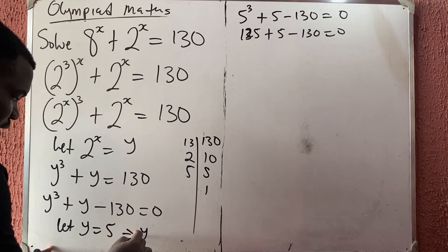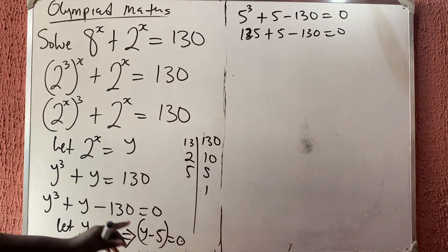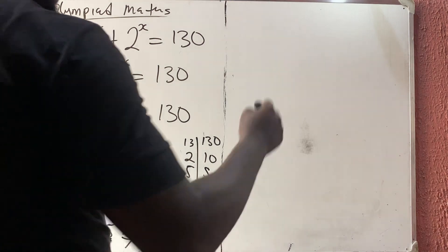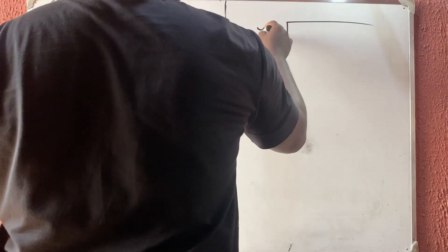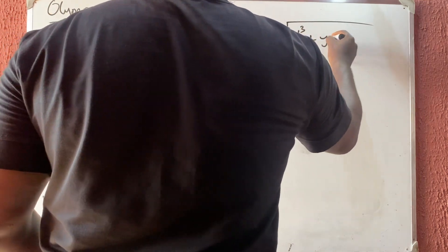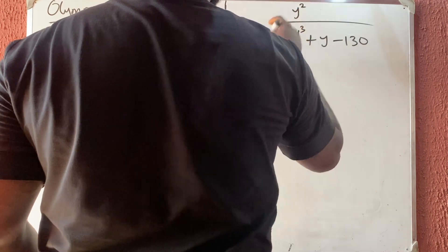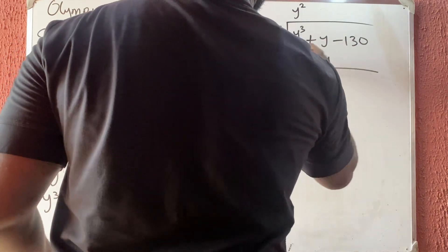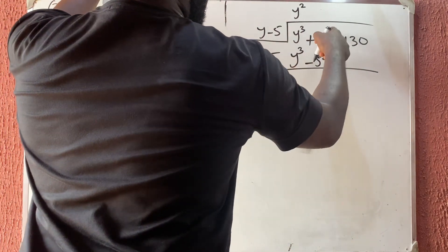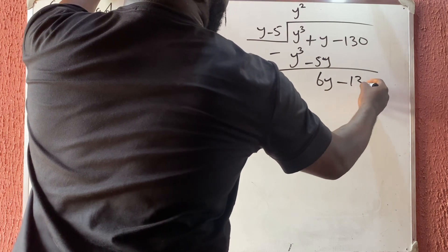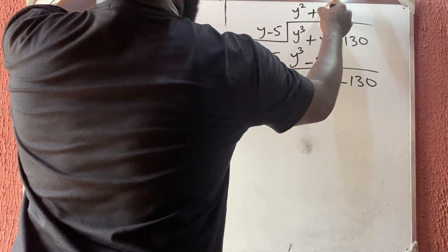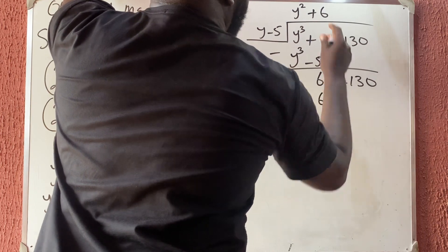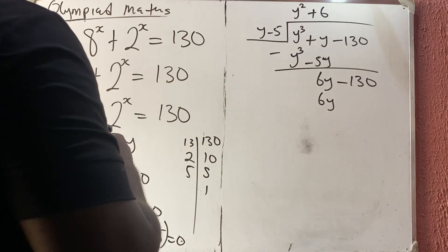Since y = 1/5 is a root, this implies y minus 1/5 is a factor. We can divide the cubic y³ + y − 1/3 by (y − 1/5) to reduce it to a quadratic. Performing the polynomial long division: (y − 1/5) into y³ gives y², then y² times (y − 1/5) gives y³ − y²/5. Subtracting, we get 5y²/5 terms... let me carry through the division carefully.